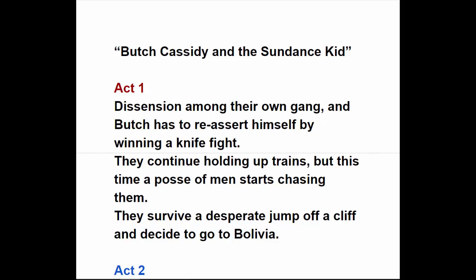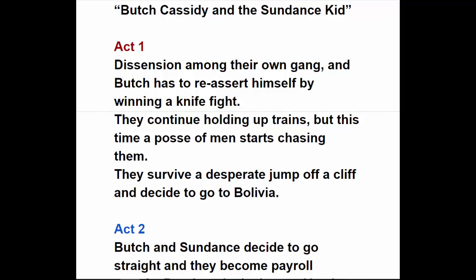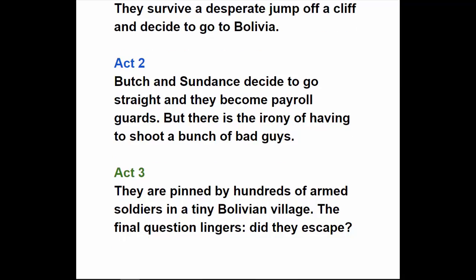Butch Cassidy and the Sundance Kid. Act One: Butch and Sundance ride back to the Hole in the Wall, where there's dissension and someone trying to take over. Butch reasserts himself by winning a knife fight. They continue holding up trains, but have developed a reputation, and a super posse starts chasing them into the mountains. They survive with a desperate jump off a cliff and decide to go to Bolivia and go straight. Act Two: they become payroll guards, but the payroll gets hijacked and they end up having to shoot a bunch of thieves trying to steal it.